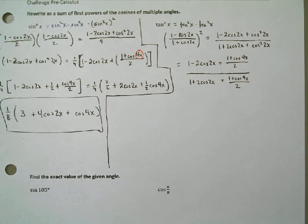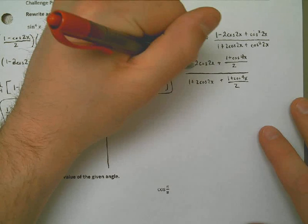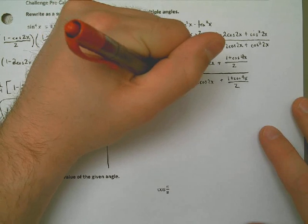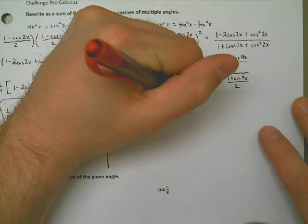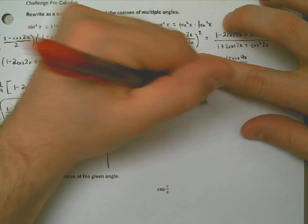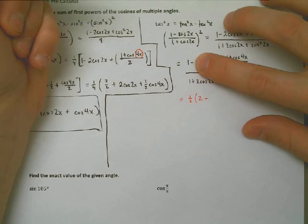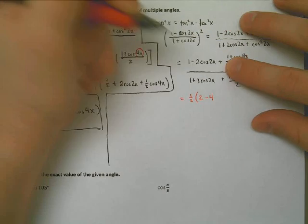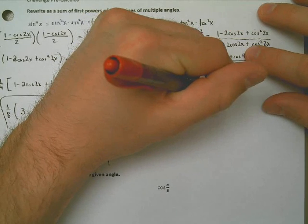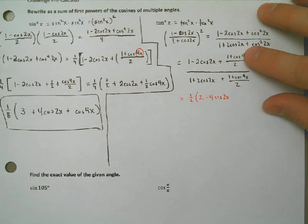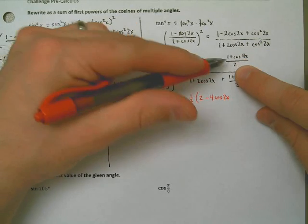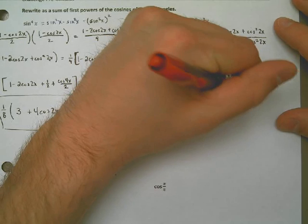Factoring a 1 half out of the top and the bottom, I end up with this. 1 half, I would need to multiply by 2 to get up here. I would need to multiply by 4 cosine 2x to get to the middle term. And then the 1 half and this actually end up canceling out, so I don't have a fraction anymore. That's the beauty of doing that.